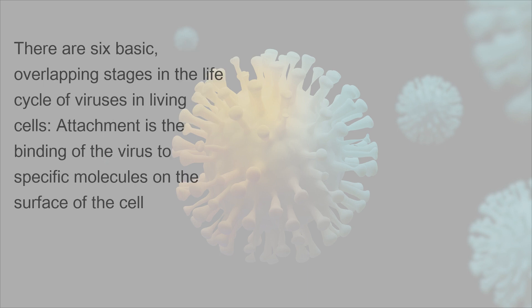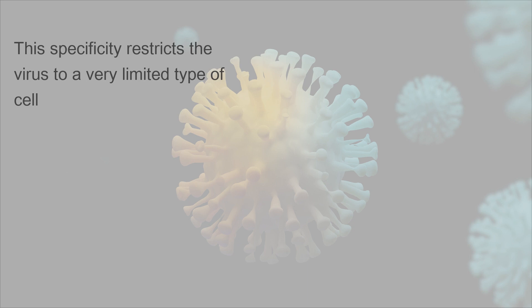There are six basic, overlapping stages in the life cycle of viruses in living cells. Attachment is the binding of the virus to specific molecules on the surface of the cell. This specificity restricts the virus to a very limited type of cell.